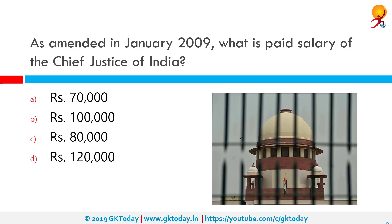As amended in January 2009, what is the paid salary of the Chief Justice of India? As per the amendments in January 2009, the correct answer is 1 lakh per month. Currently, the Chief Justice of the Supreme Court earns a salary of 2 lakh 80,000 per month, and the associate justices earn 2 lakh 50,000 per month.